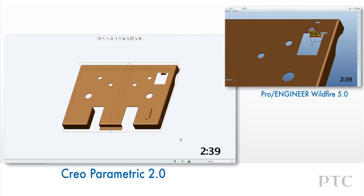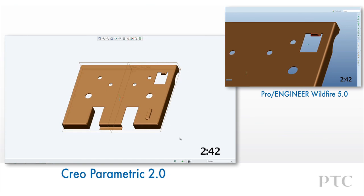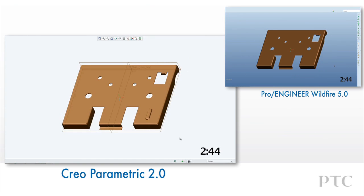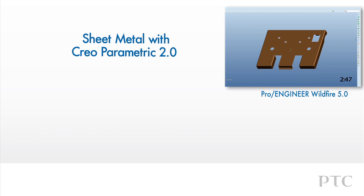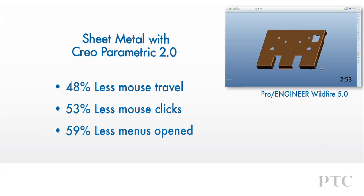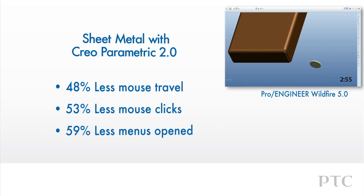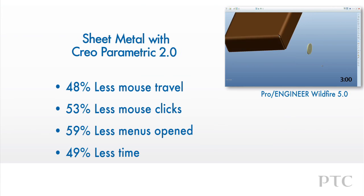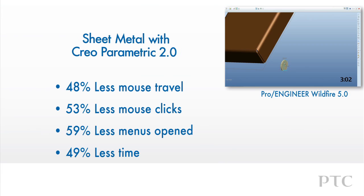We've shown some of the key highlights in creating sheet metal parts with CREO PARAMETRIC, including new capabilities and streamlined workflows. The result is improved design productivity — even in this short comparison, I saved 49% of the time taken to achieve the same result with CREO PARAMETRIC compared to Pro Engineer Wildfire.